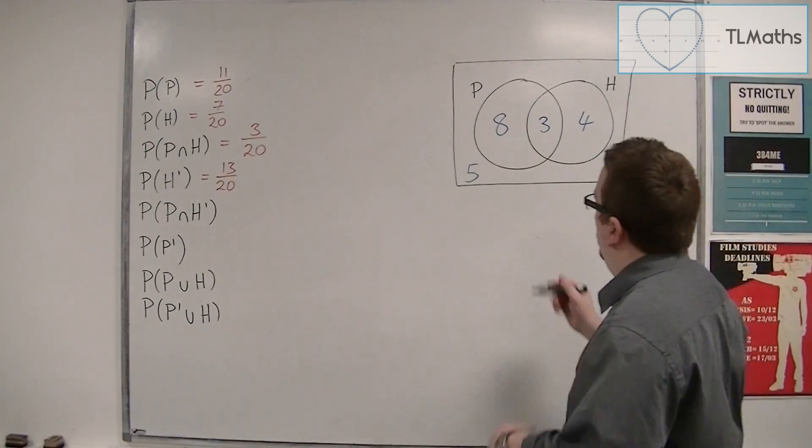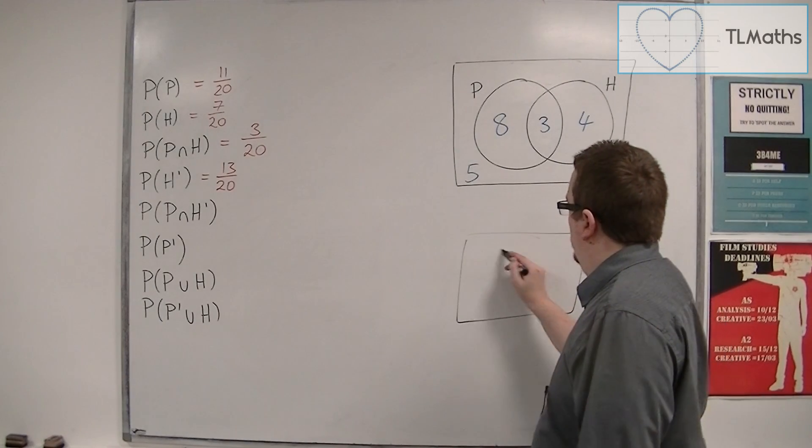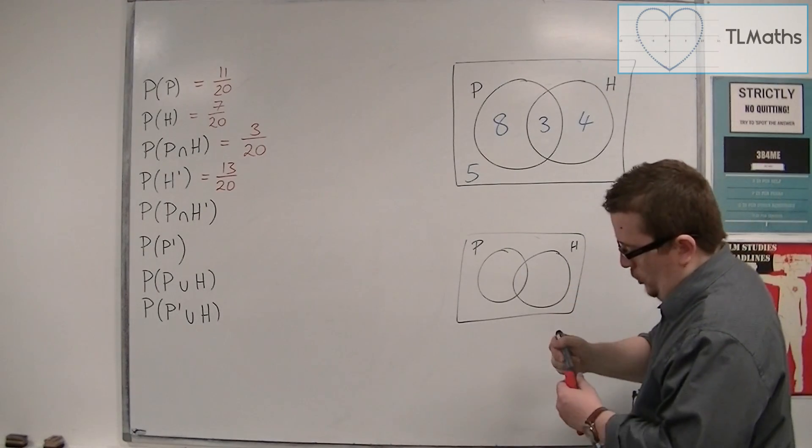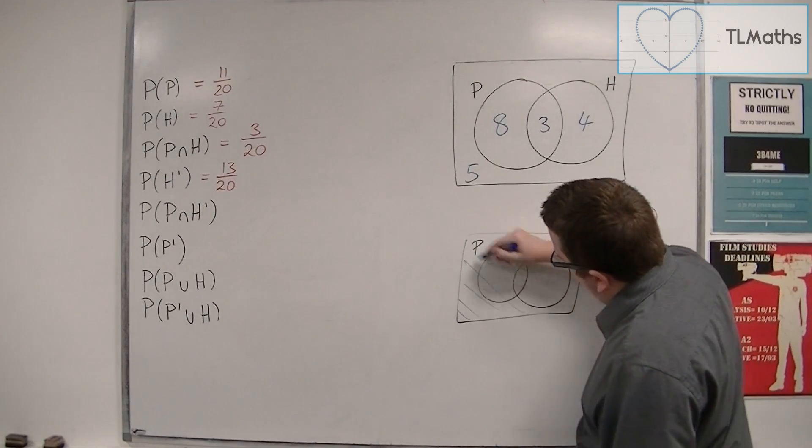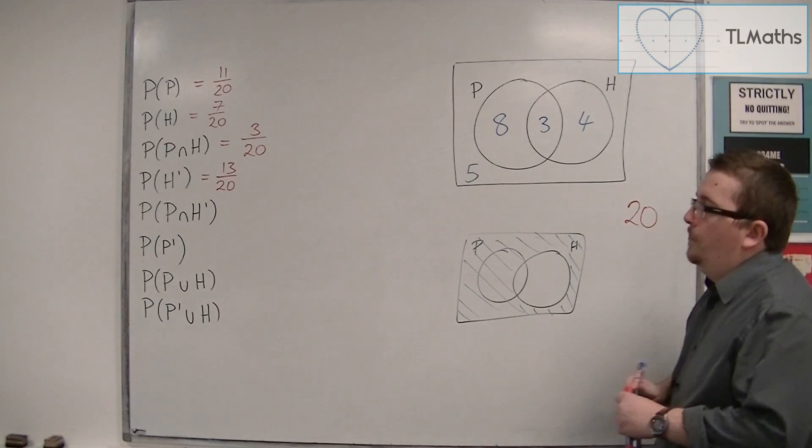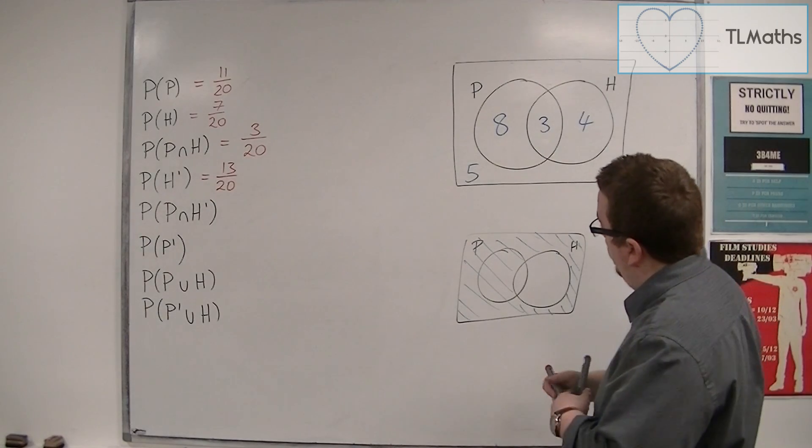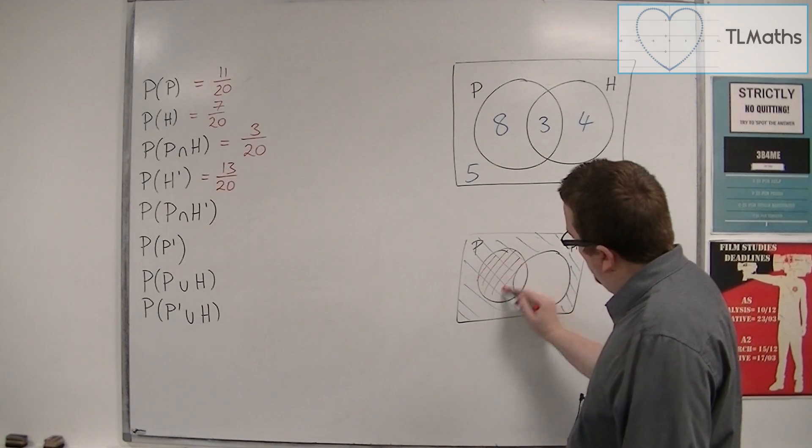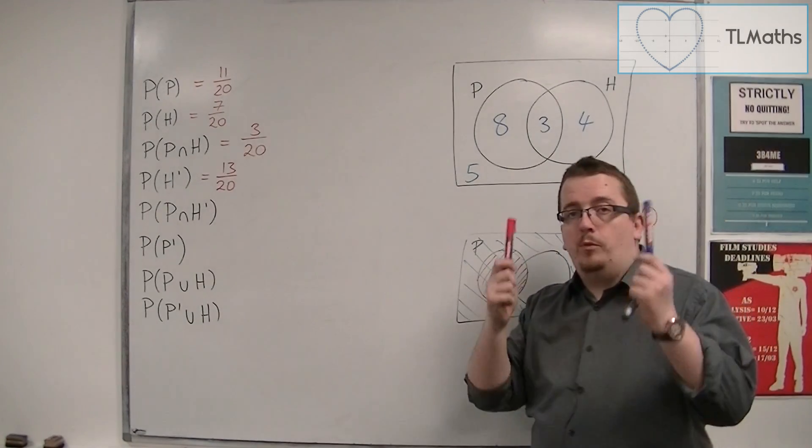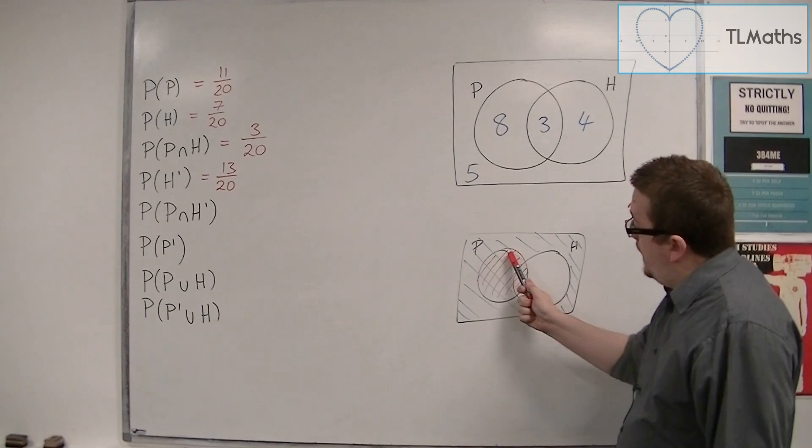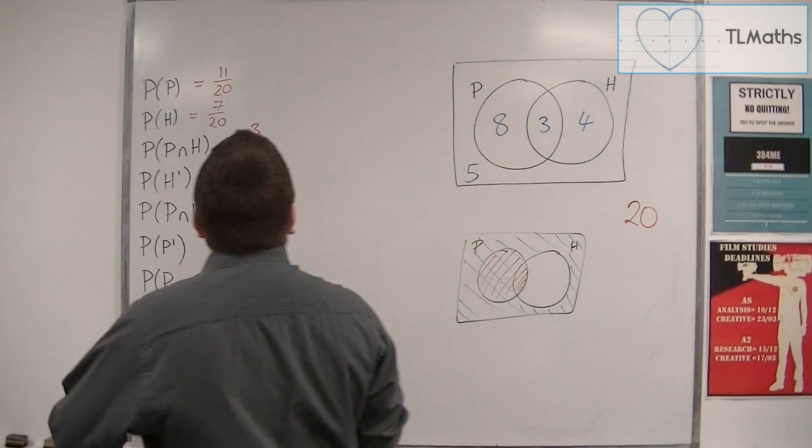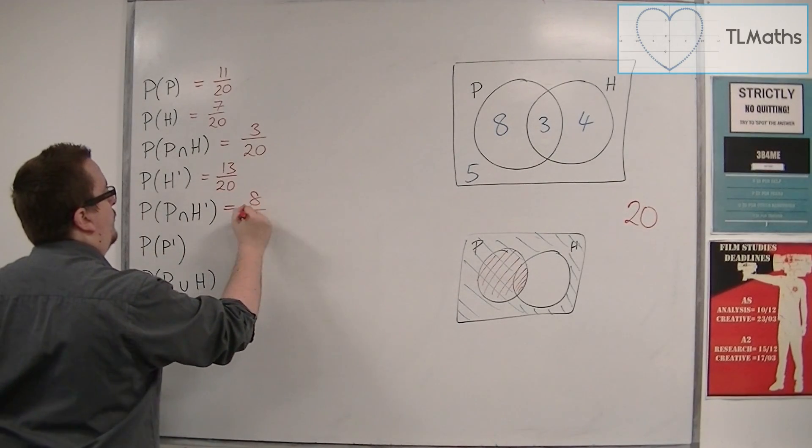So you're looking at the overlap between not H, which is effectively outside of H. So if we do a separate diagram down here, here's H, here's P. So not H is that bit there. And P is this bit here. So where does the red overlap with the blue? Well, it overlaps in just this bit here, this kind of crescent shape. And so that is just 8.